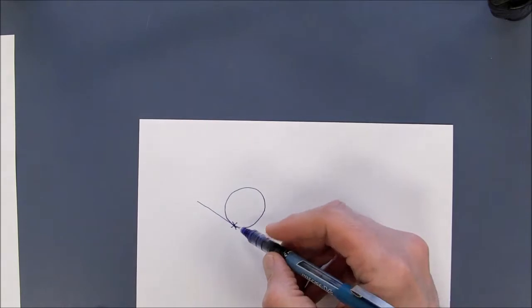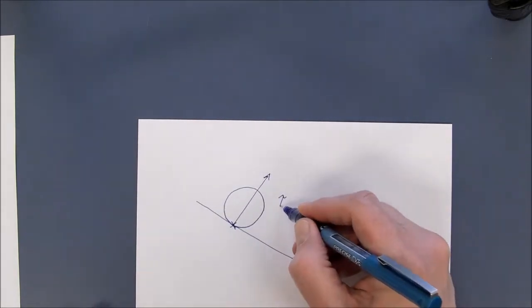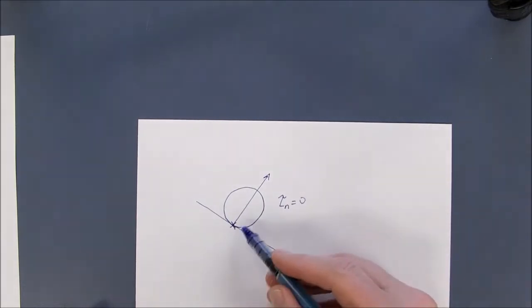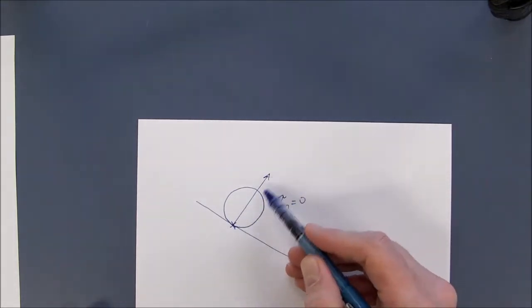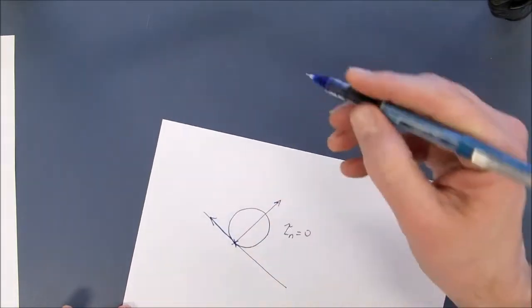So if we analyze the torque of the normal force, that is zero because the radius of that torque is zero, the moment arm is zero.